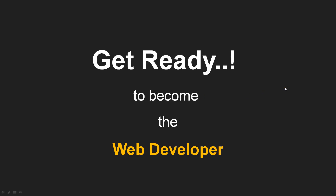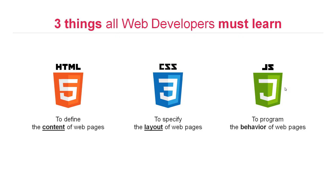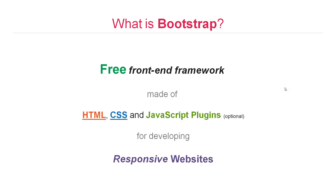Hello everyone. In today's session we are going to start Bootstrap, so get ready to become a web developer. Basically, three things all web developers must learn: first is HTML, second is CSS, and third is JavaScript. All three have different aspects to web development. HTML defines your content, CSS specifies the layouts and styling of the website, and JavaScript defines the behavior and how the website will be interacted with by the user. We have already covered these three things in our previous sessions.